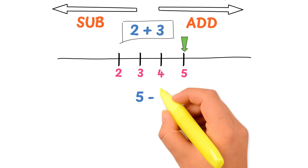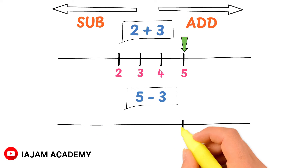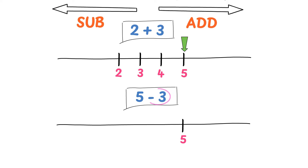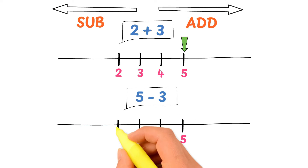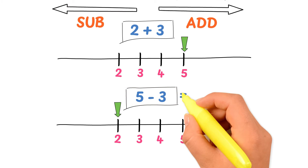Now consider 5 minus 3. Draw a number line and write the first integer which is positive 5. The second integer is negative 3, so we have to travel or move 3 spaces to the left: 1, 2, and 3. We land on 4, 3, and 2. So 5 minus 3 is equal to 2.